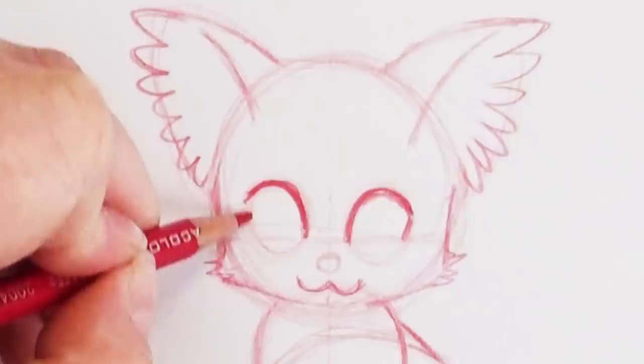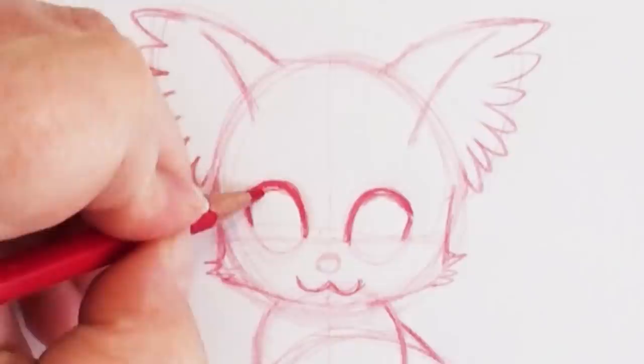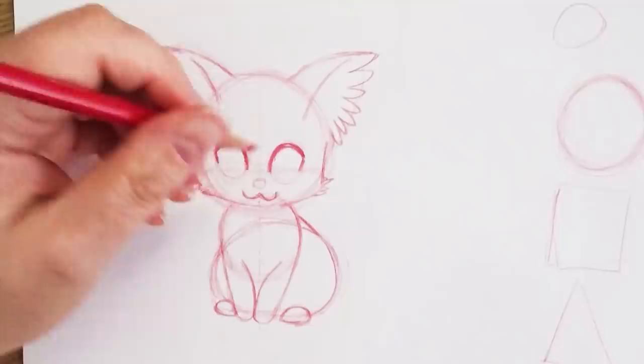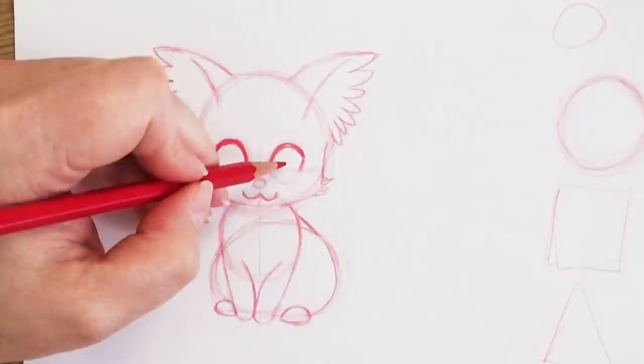Now I'm going to put in his pupils. Normally we would add circles for the pupils, but because this is a dragon, you can add any shape you want. You could add diamonds or hearts or squares or slits. I'm going to go ahead and add in kind of a diamond shape. I'm feeling diamonds right there. There's his face all done.